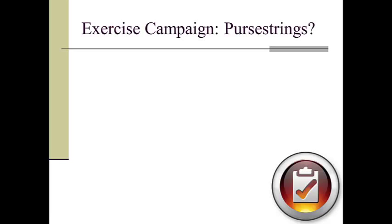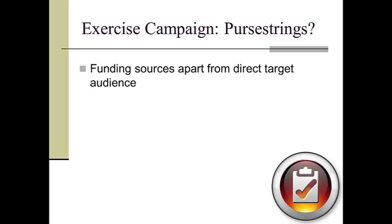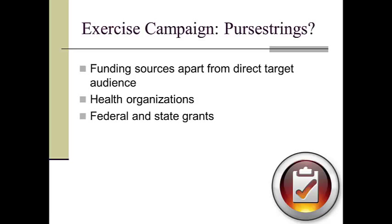And also importantly, who holds the purse strings — who is going to fund our worthwhile project? Frequently, we need to find funding sources apart from a direct target audience. Quite often, our target may be low income and unable to pay for the services they receive. So for funding our exercise program, we might turn to health organizations and seek federal and state grants, or request funding from local and national foundations.